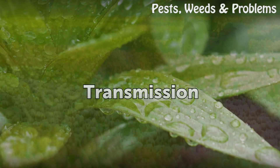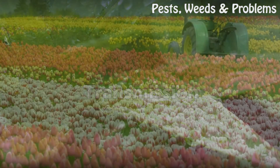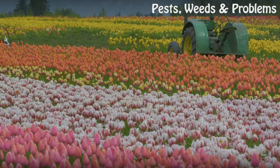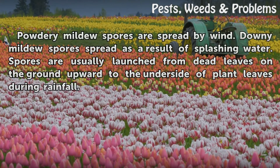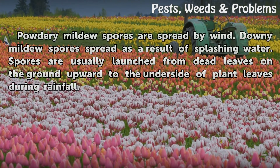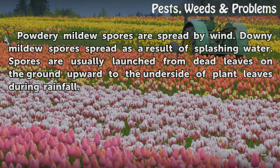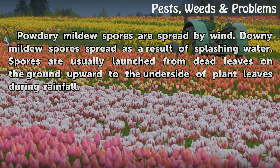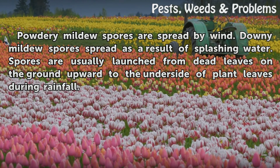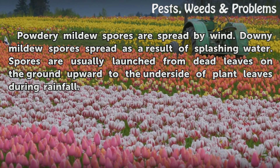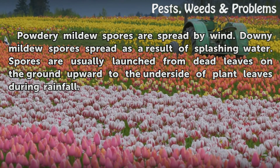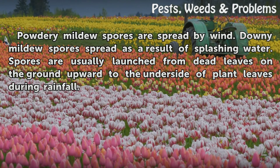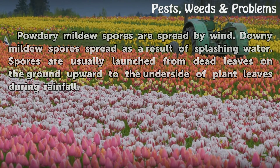Transmission: Powdery mildew spores are spread by wind. Downy mildew spores spread as a result of splashing water — spores are usually launched from dead leaves on the ground upward to the underside of plant leaves during rainfall.